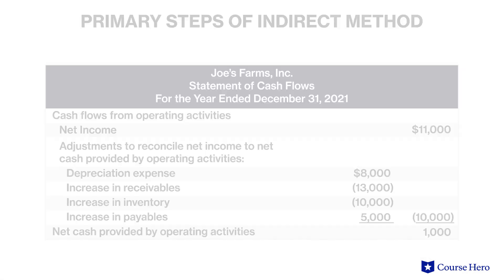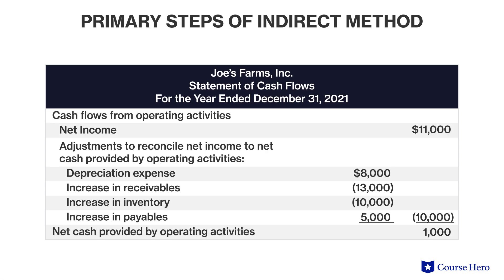Suppose Joe's Farms Inc. needs to prepare its statement of cash flows using the balance sheet and the income statement. Using the indirect method, the company starts with the $11,000 figure for net income. It will then adjust for depreciation expense of $8,000, the increase in accounts receivable of $13,000, the increase in inventory of $10,000, and the increase in accounts payable of $5,000.